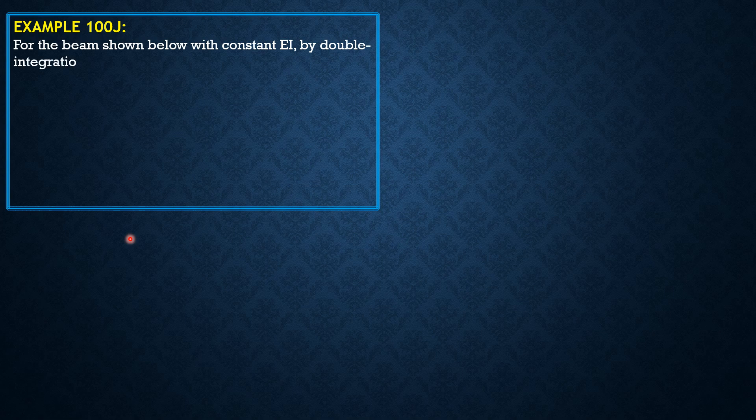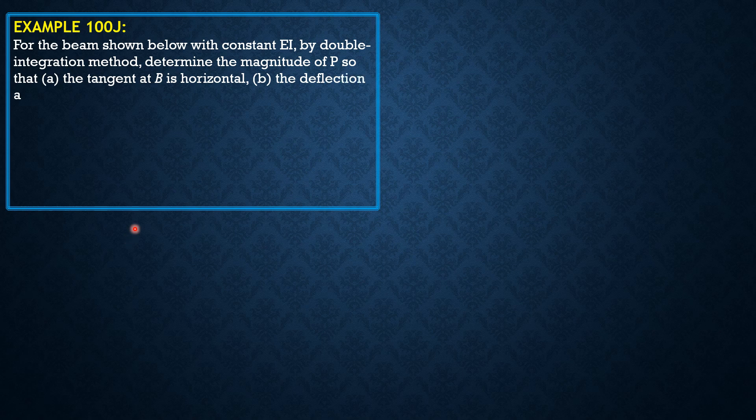For the beam shown below, with constant EI, by the double integration method, determine the magnitude of B so that: (A) the tangent at B is horizontal, and (B) the deflection at C is zero.